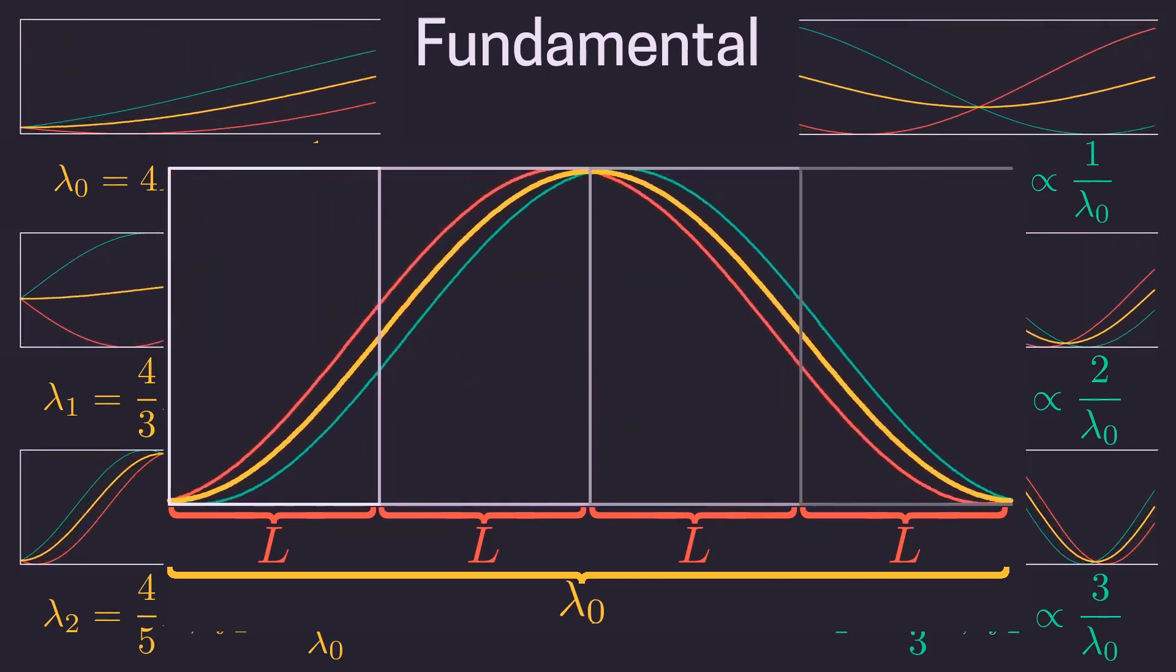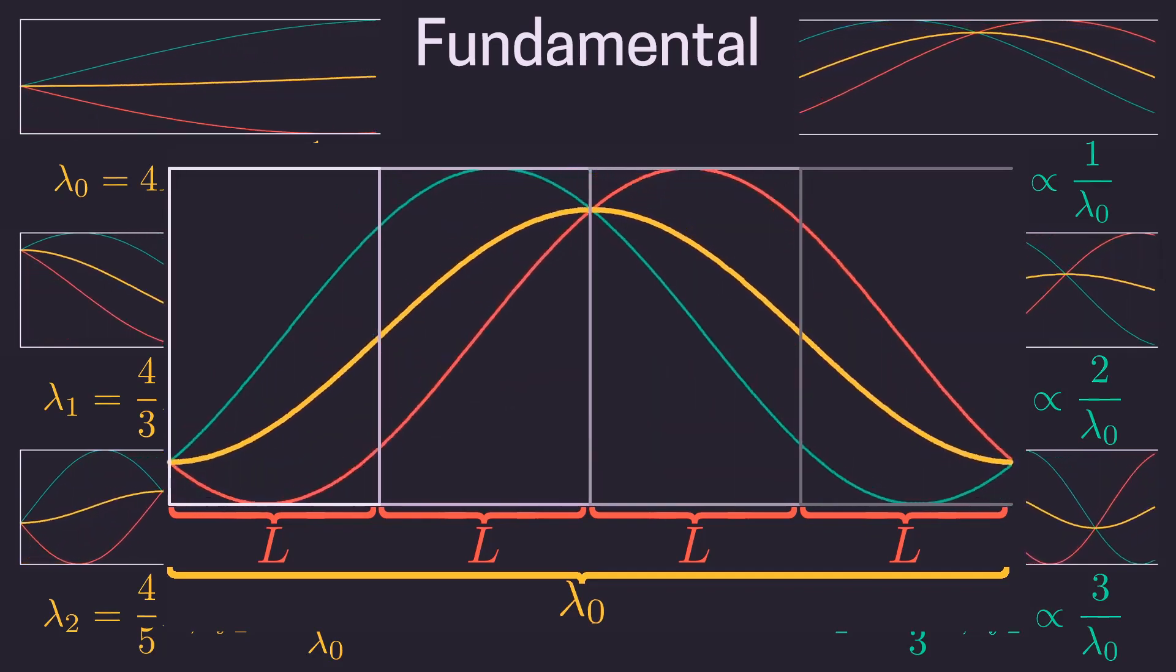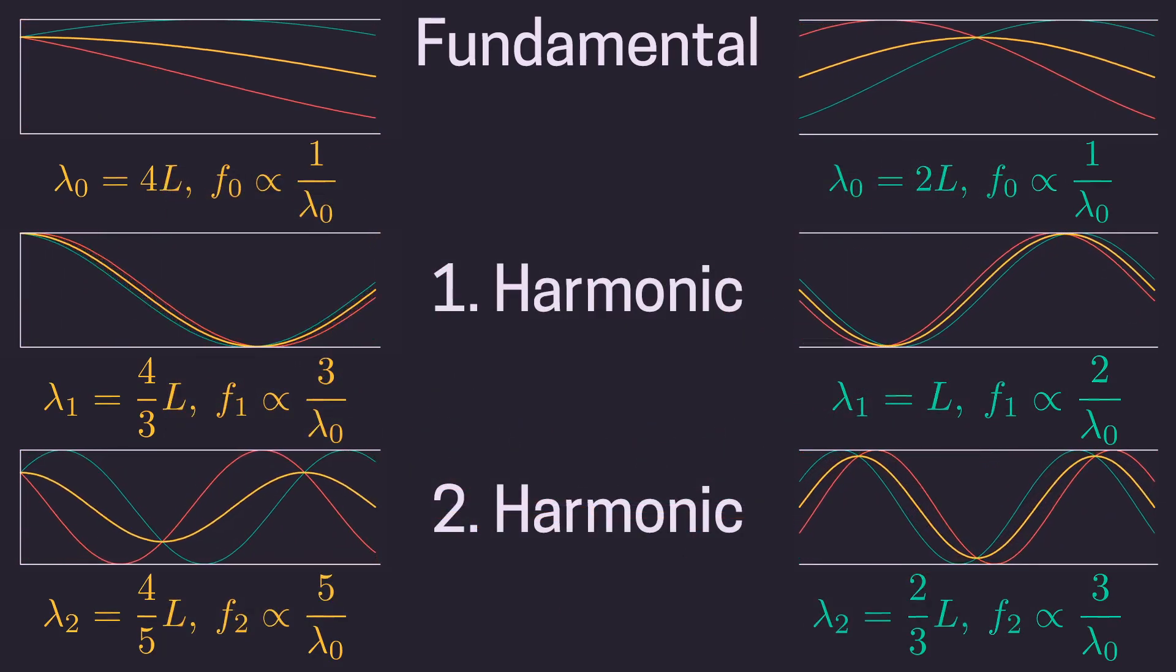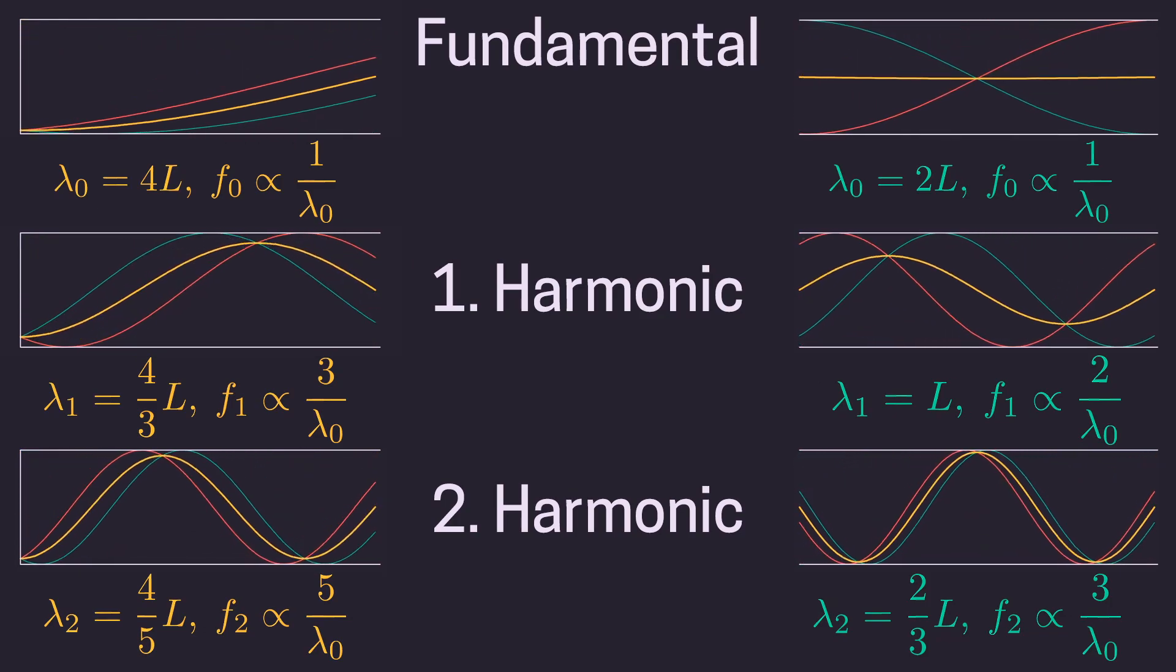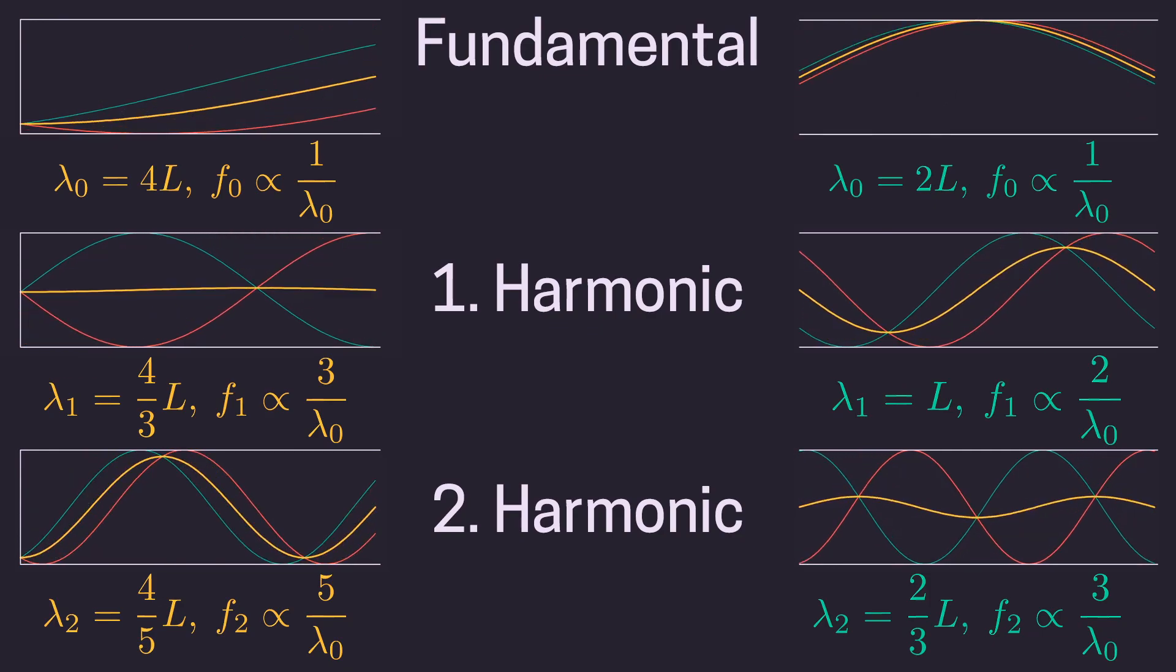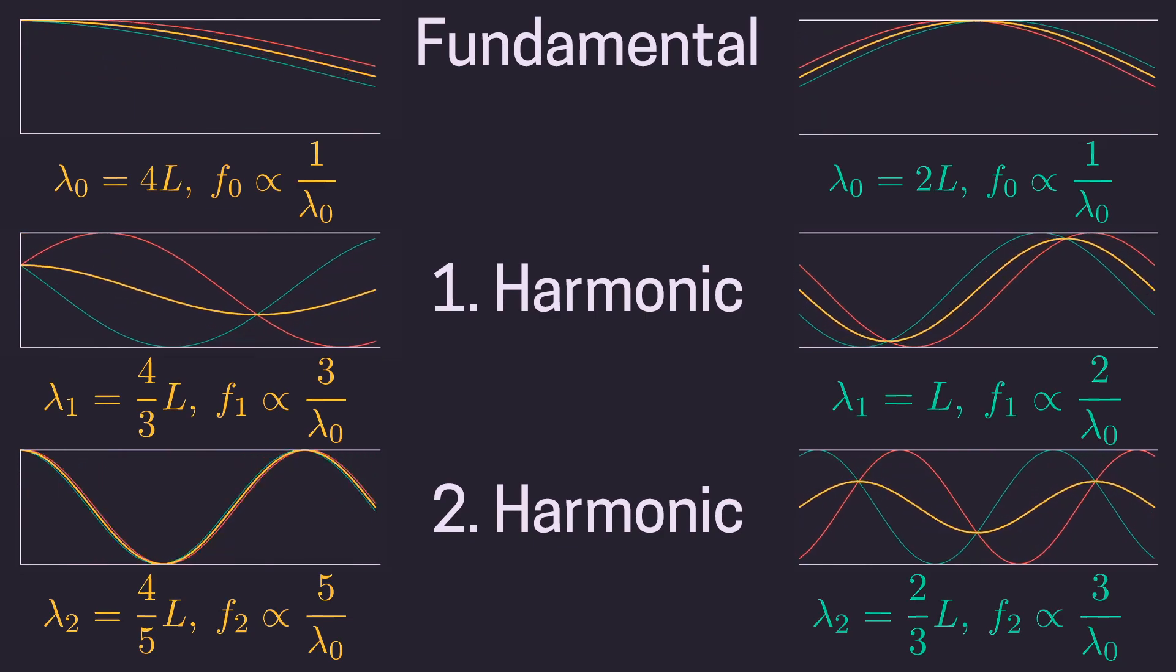The frequency is inversely proportional to the wavelength. Just like that, we can calculate all the frequencies shown on screen. We can see that for the closed pipe we get only the odd harmonics. 3 times, 5 times, 7 times the fundamental frequency and so on. These are exactly the harmonics of the clarinet.